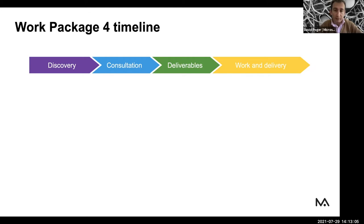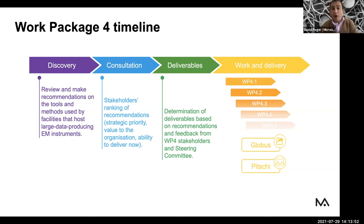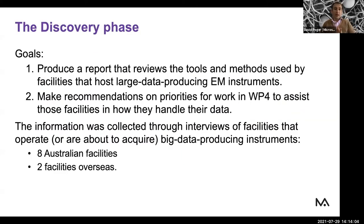In Work Package 4 there was a discovery phase that kept us busy for six to seven months last year. First, we reviewed the informatics landscape nationally and overseas, then made recommendations to ACCS stakeholders on what we thought was worth investigating further. We consulted with stakeholders to know what they thought of the recommendations — whether they'd be fruitful to their facilities or the community. Based on that consultation we determined deliverables and started working on them, delivering two main things so far: Globus and Peachy/Clouder.